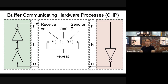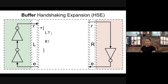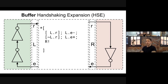We take tokens one after another from L and forward them straight on to R. To do that we need to work down from CHP back to production rules. We expand the L receive into handshaking expansions: wait for a request on L, lower the enable to signify we received the data, wait for the request to reset on L, then raise the enable to signify we are ready for the next value.